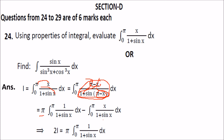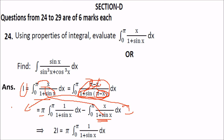This constant term can be taken out, and this is x by 1 plus sin x — this was I, and this is again I, the same integral. So we can write it as I and transfer it to the left-hand side. So I plus I becomes 2I.